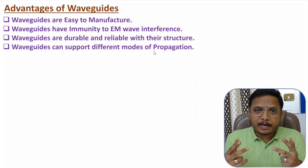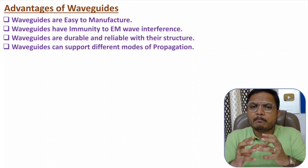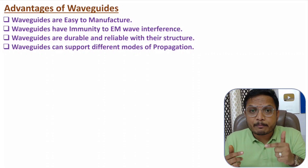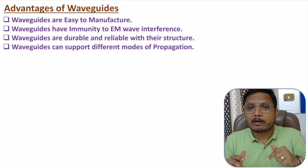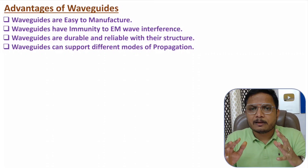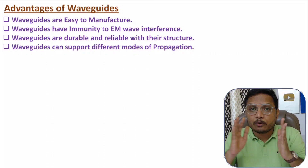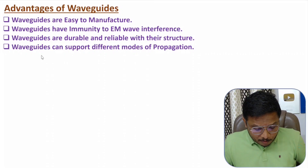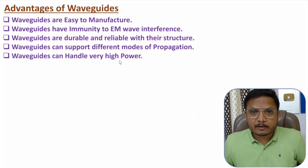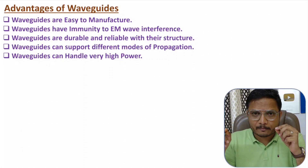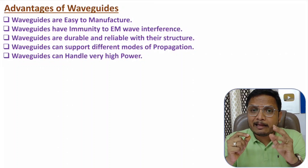Waveguides can support different modes of propagation. The waveguide supports TE and TM modes but does not support TEM mode. With TE and TM there are many modes supported by the waveguide, and those modes are useful to propagate signal from one end to another. Waveguides can also handle very high power, since inside the waveguide we have total internal reflection which supports huge power, while a transmission line can handle only low power signals.